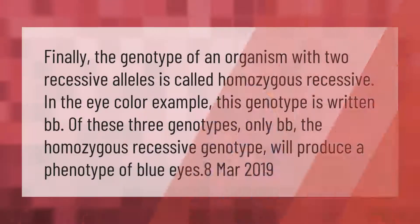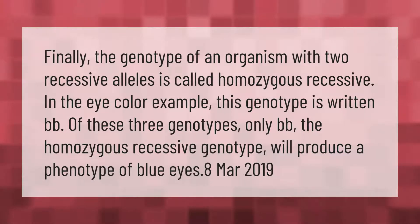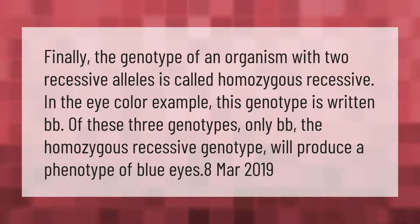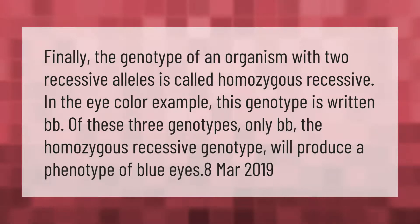Finally, the genotype of an organism with two recessive alleles is called homozygous recessive. In the eye color example, this genotype is written bb. Of these three genotypes, only bb — the homozygous recessive genotype — will produce a phenotype of blue eyes.